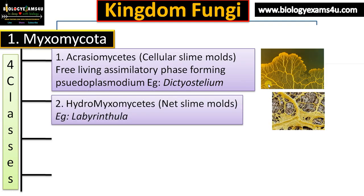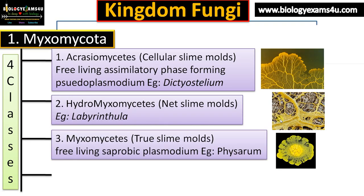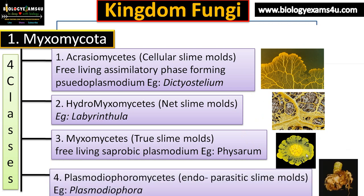The second class is Hydromyxomycetes, often called net slime molds. Example includes Labyrinthula. The third class is Myxomycetes — the true slime molds — which have a plasmodium and are saprophytic. The classical example is Physarum. The fourth class is Plasmodiophoromycetes, which is parasitic inside the host — often parasitic in cabbage and in algae. Example includes Plasmodiophora.